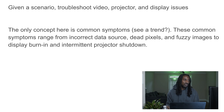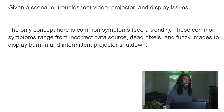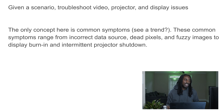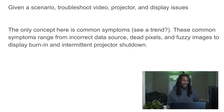For video, projector, and display issues: common symptoms range from incorrect data source, dead pixels, and fuzzy images to display burn-in and intermittent projector shutdown. For projectors, pretty much once that bulb is out, the projector is over — and the bulb costs just about as much as the projector, so you might as well just get a new one.